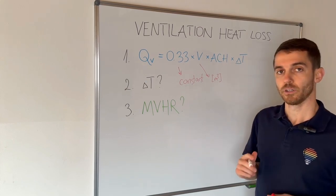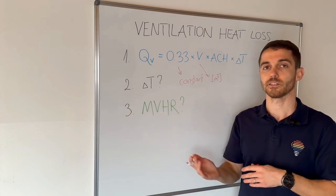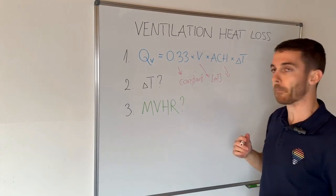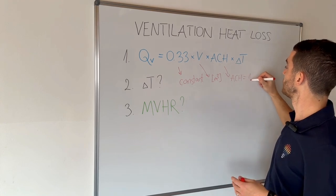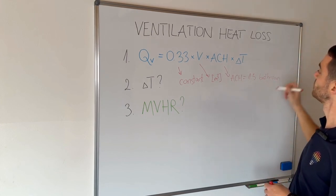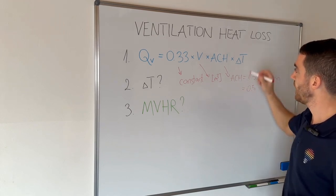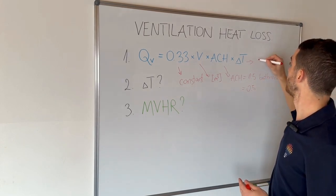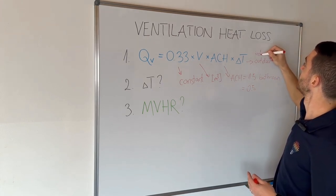Air changes per hour is usually calculated from formulas, legislation, and norms. In most countries, for example, air changes per hour in a bathroom is 1.5, and in other rooms it is 0.5. Delta T is the same as in fabric heat loss — the temperature difference between outdoor and indoor temperature.